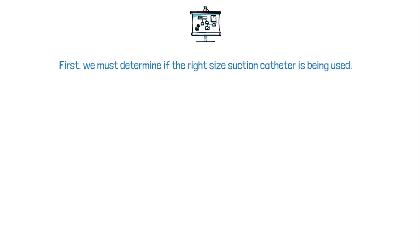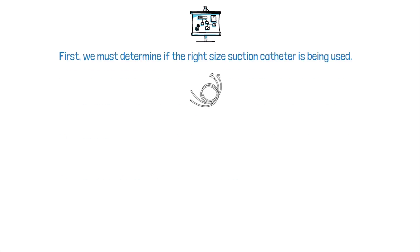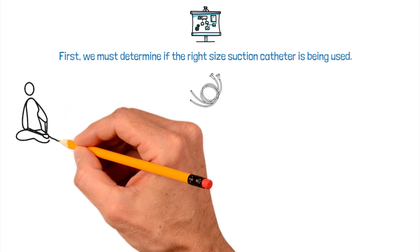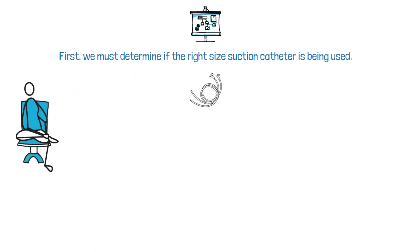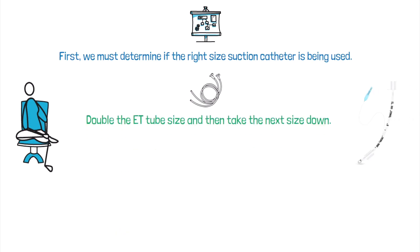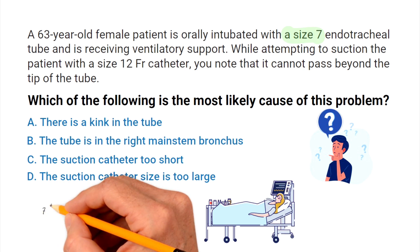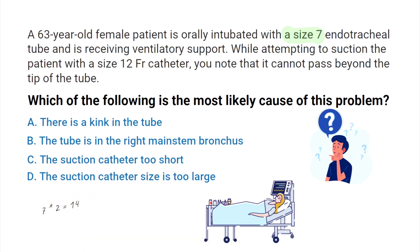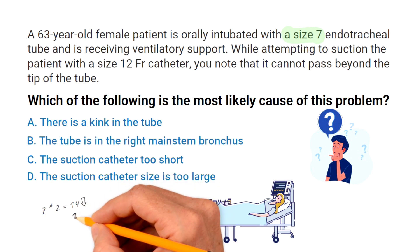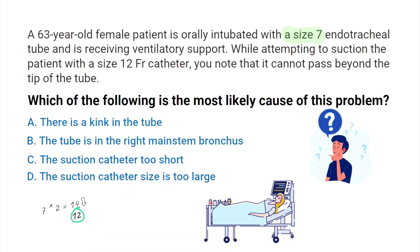After reading the question and answer choices, first we must determine if the right size suction catheter is being used. A quick and simple way to do so is to double the ET tube size and then take the next size down. For example, the question tells us that the patient has a size 7 endotracheal tube, so we double that number to get 14, then take the next smallest catheter size, which would be a size 12. This confirms that a size 12 catheter is the appropriate size for a size 7 endotracheal tube.